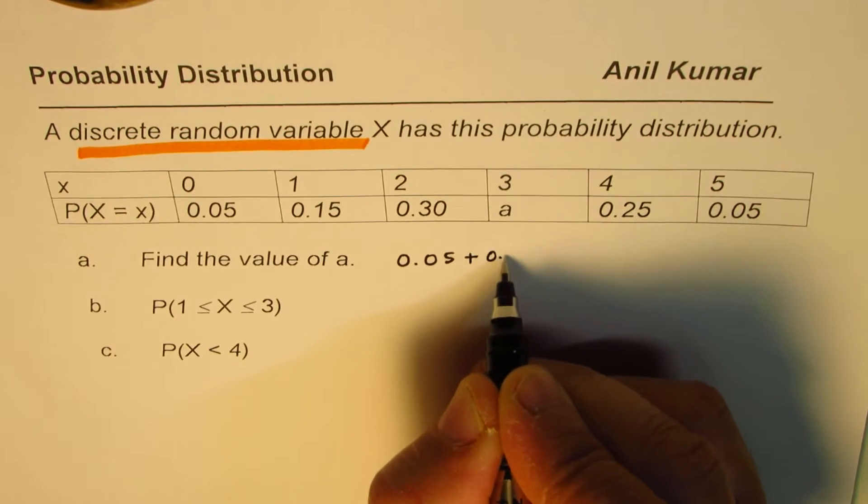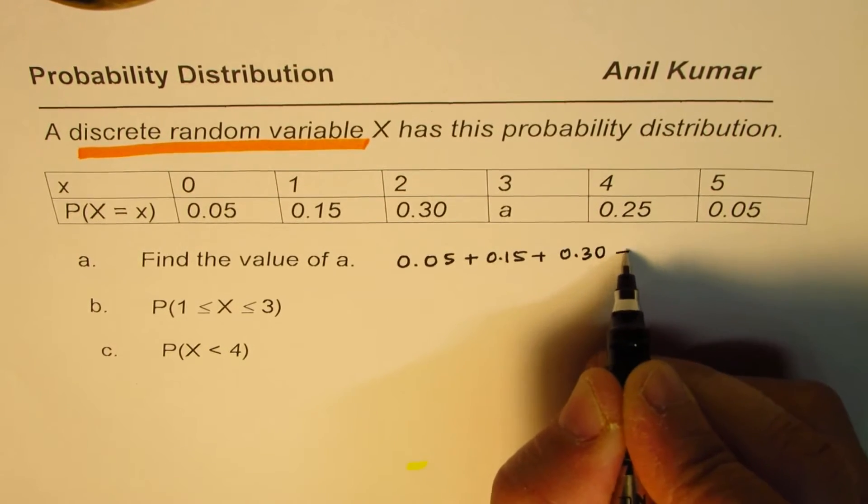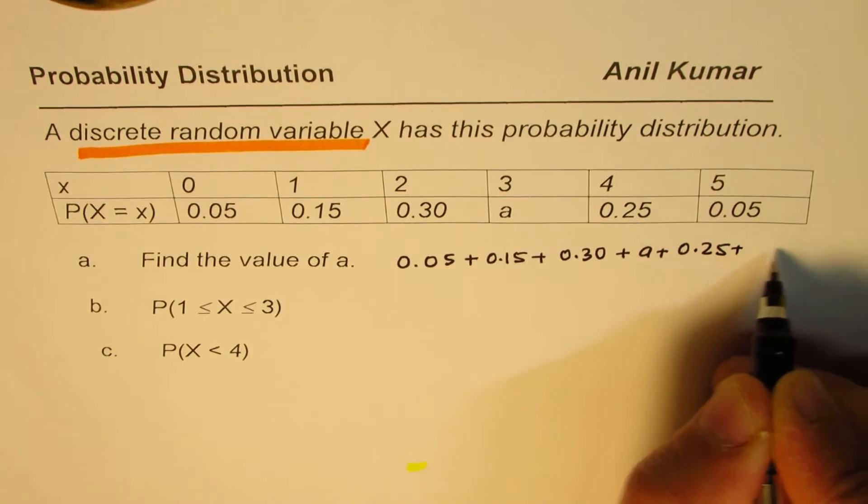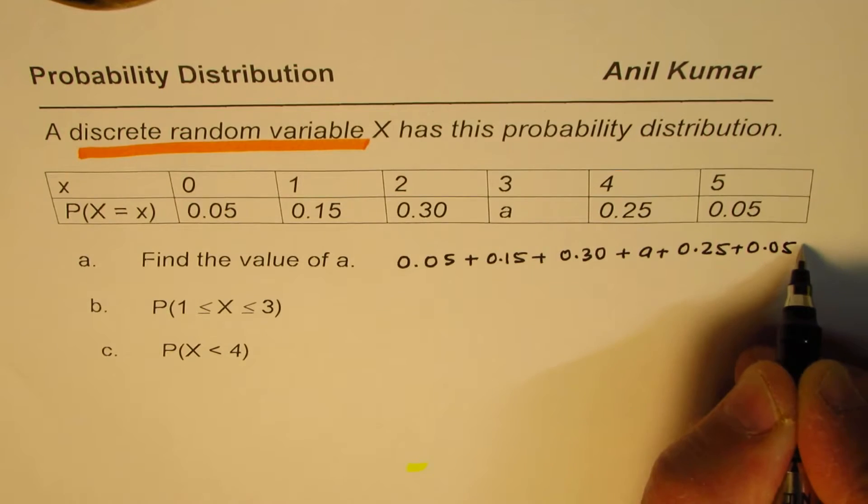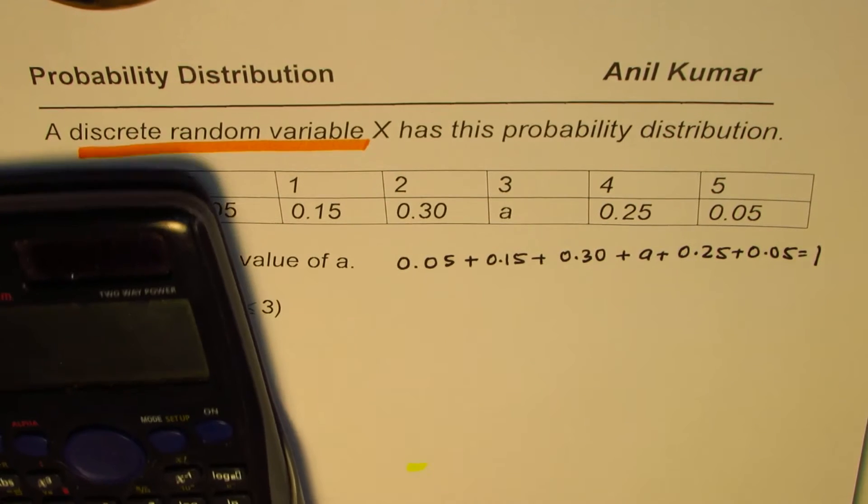0.05 plus 0.15 plus 0.30 plus A plus 0.25 plus 0.05 equals to 1. Solving this equation, we should find the value of A. So let's do this.